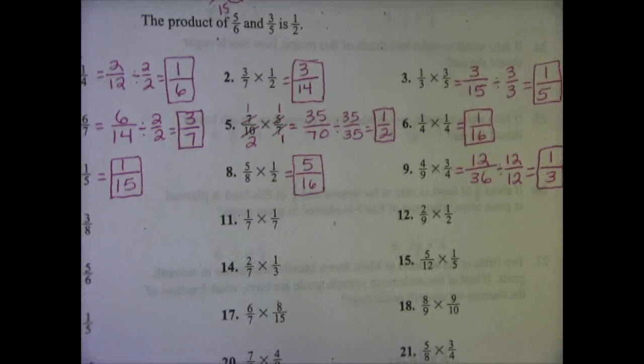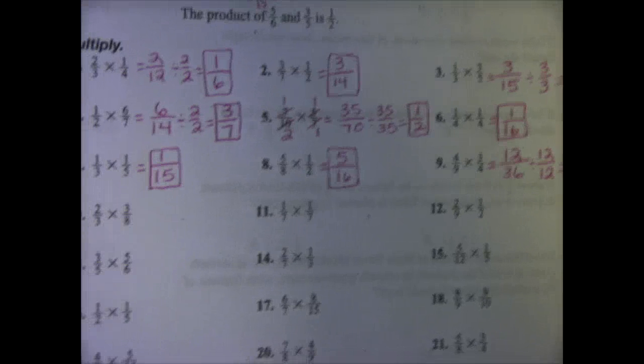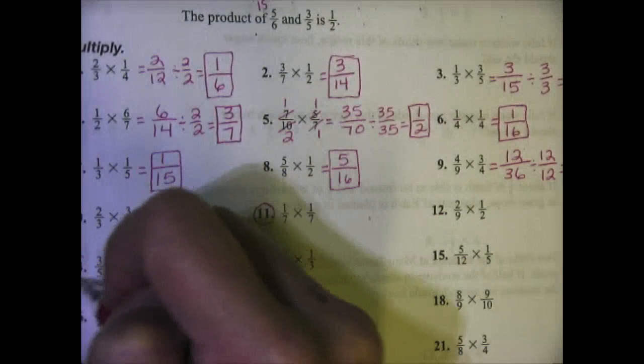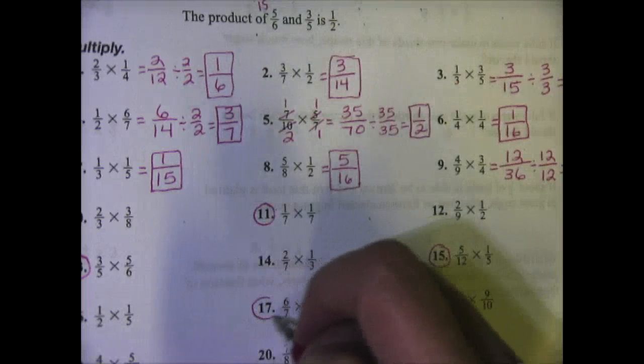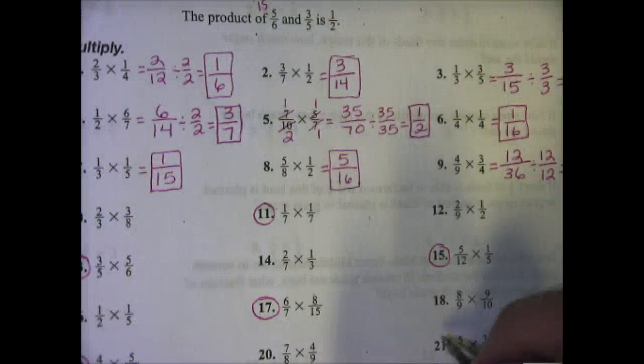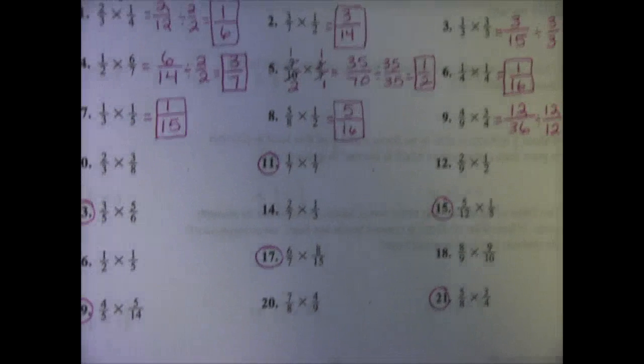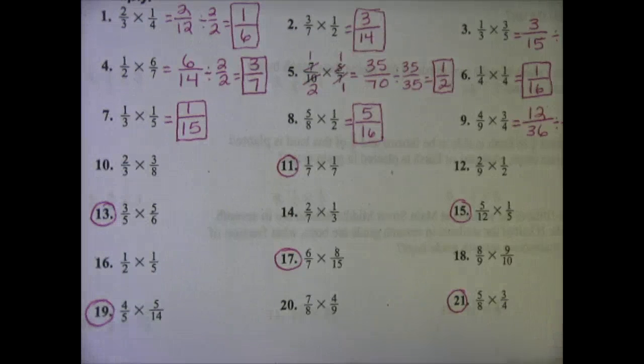Let's take a look down at the bottom, numbers 10 through 21. Take a few minutes and I want you to work the odd problems: 11, 13, 15, 17, 19, and 21. You're welcome to also work the evens if you would like for extra practice, but it is not necessary. Work the odds and then come back to the video. We'll go to the back side and look at the word problems.